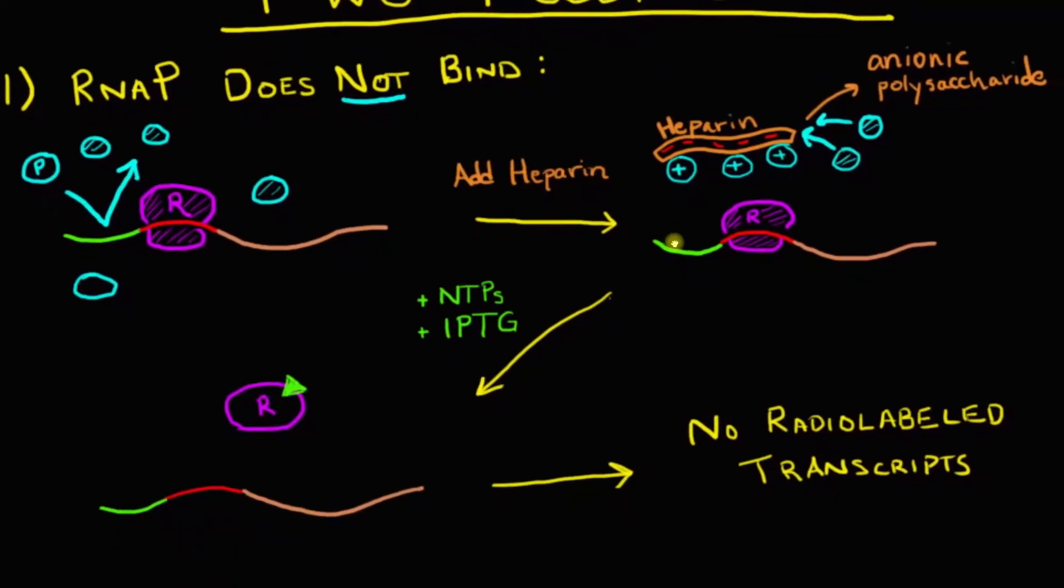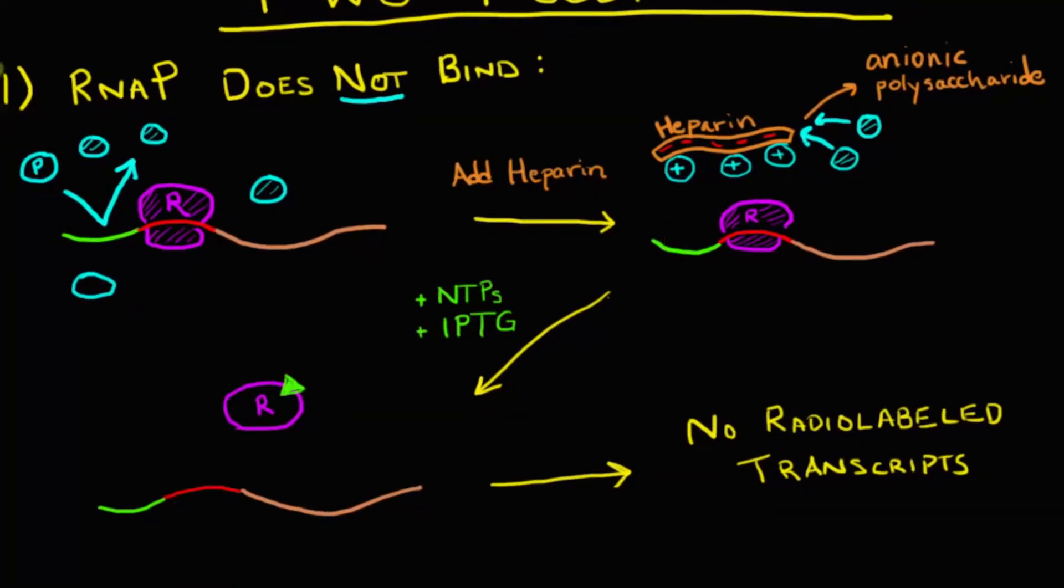Next, we can add in two things. We can add in NTPs, nucleotide triphosphates, and our inducer, IPTG. So importantly, one of these NTPs has to be radiolabeled so we can actually visualize what we're doing. We're going to radiolabel CTP. And the inducer, IPTG, its main job is to come here, bind to the repressor, cause a conformational shift, which releases the repressor from the operator. So the inducer makes sure that the repressor leaves the operator.